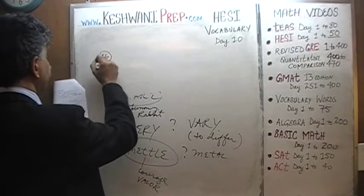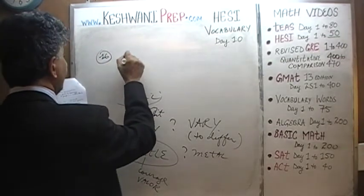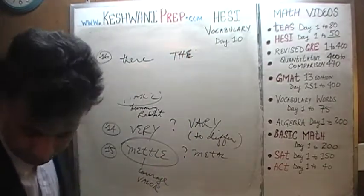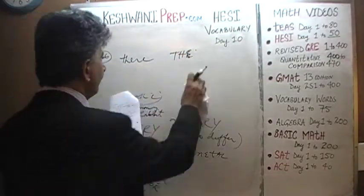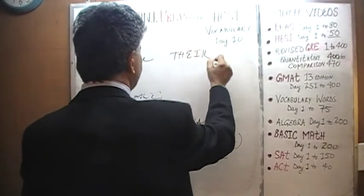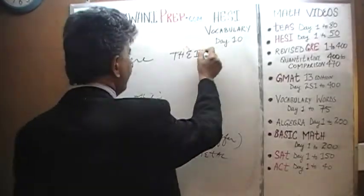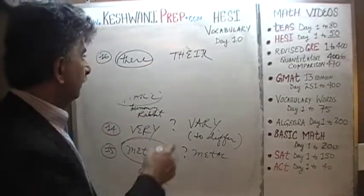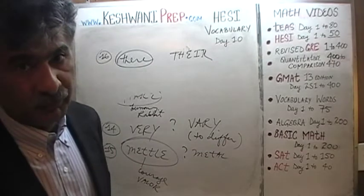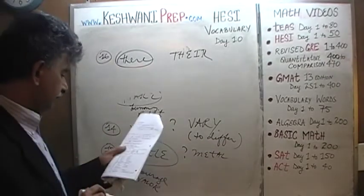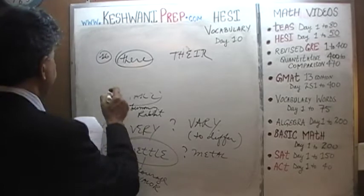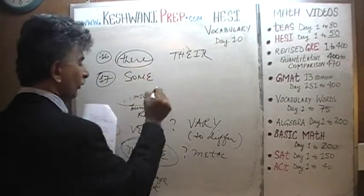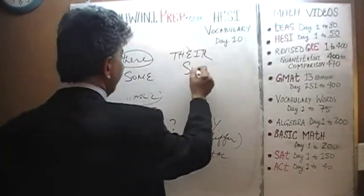Number sixteen: 'there' and 'their.' 'There' as in not here but over there, and 'their' as the possessive pronoun — it's not ours, it's theirs. Also: 'some,' S-O-M-E, and 'sum,' S-U-M.